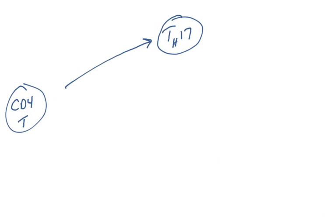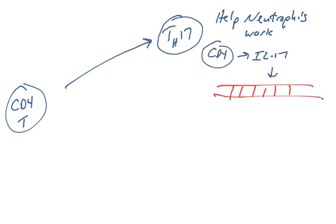Th17 helper T-cells. The function of these cells is to help neutrophils. If the immune system says we really need neutrophils to fight this infection or fight this pathogen, then CD4 T-cells will turn into Th17 cells, differentiate into them. How do these cells work to help neutrophils? They will secrete a cytokine called IL-17. That's why they're called Th17 cells.